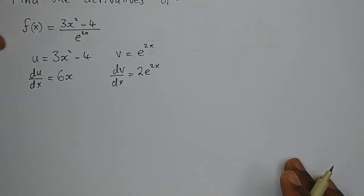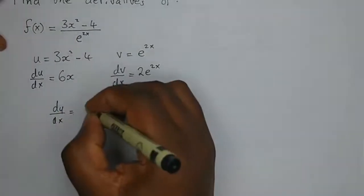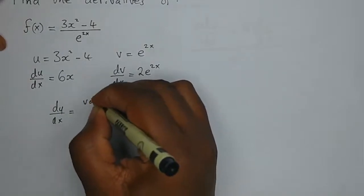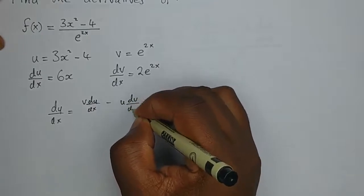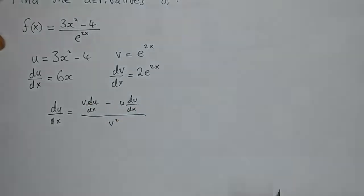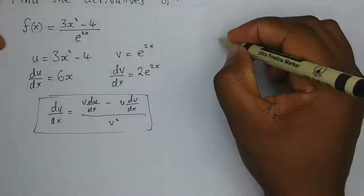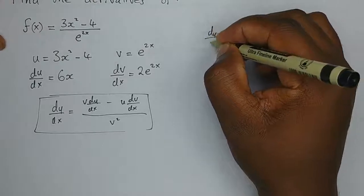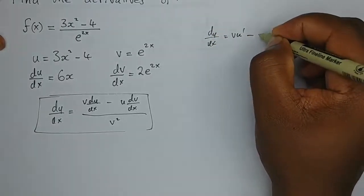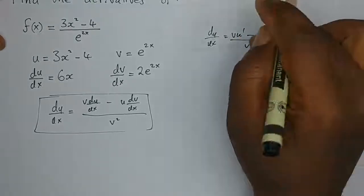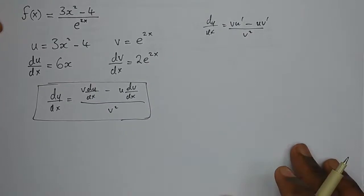The derivative of v, dv/dx, is simply 2e to the power 2x. Now we put this into the formula. The quotient rule is given by v du/dx minus u dv/dx, all over v squared. This formula can also be written in short form as dy/dx equals v times u prime minus u times v prime, over v squared — it represents the same formula.